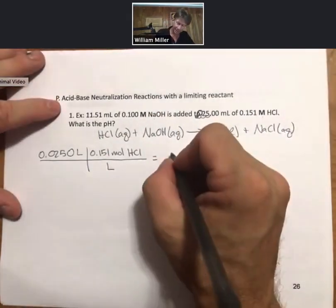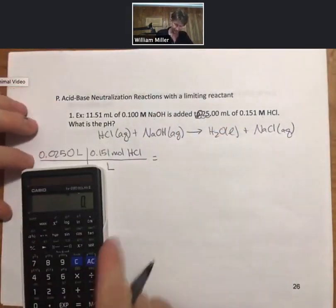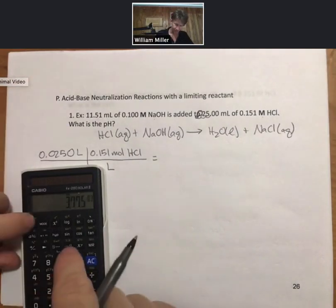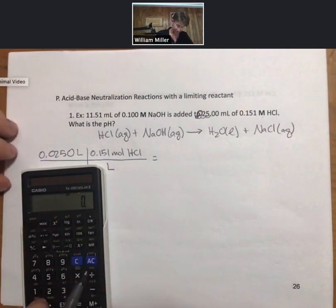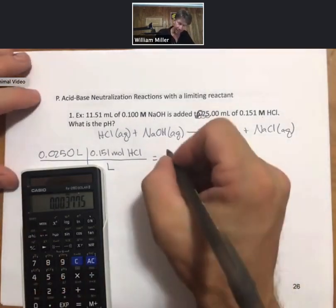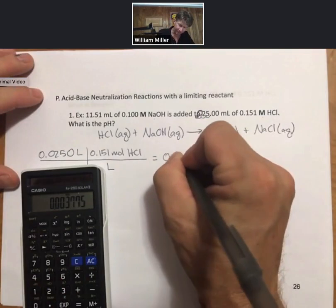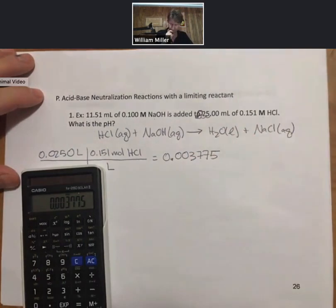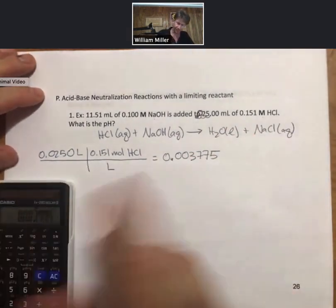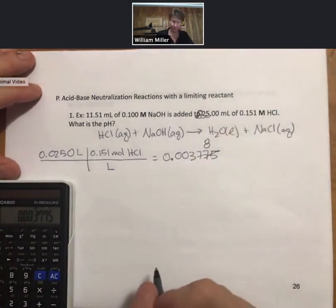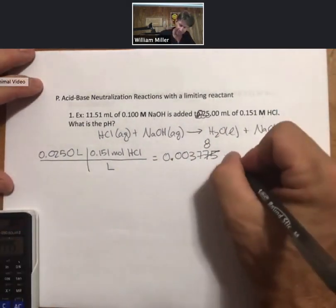0.025 times 0.151 equals, and then I hit mode. Scientific notation is fine. I like numbers for these. Actually I'm going to round that to an 8 to keep my three sig figs. So that's moles of HCl.